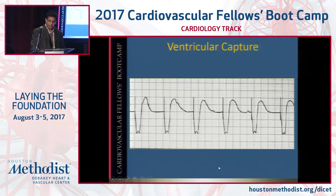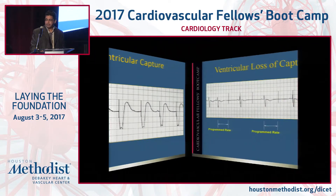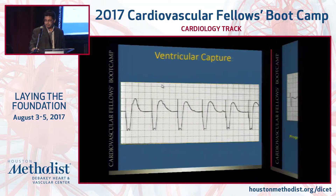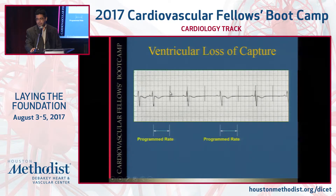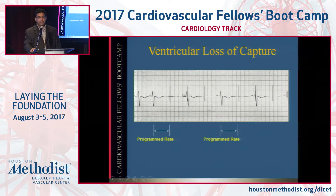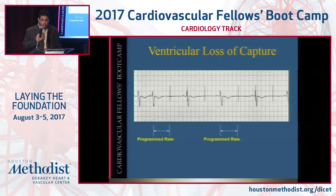Ventricular capture: every pacing spike should be followed by a QRS. Ventricular loss of capture — in this case you see pacing spikes marching through at around 75 beats per minute, and not one of them has a P wave or QRS following it. This is a situation where either the lead is floating, or the pacemaker is programmed to output too small a pacing spike.